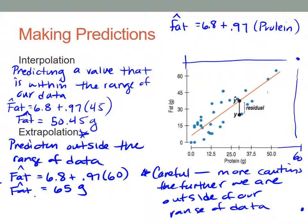So predictions very far outside of our range of data are risky. One last thing about making predictions with our equation: we can't make them backwards. This equation that we have written here only predicts fat.